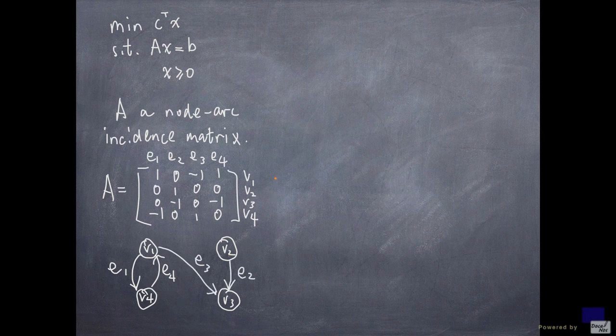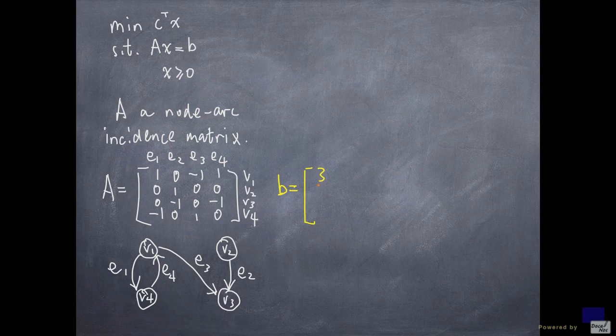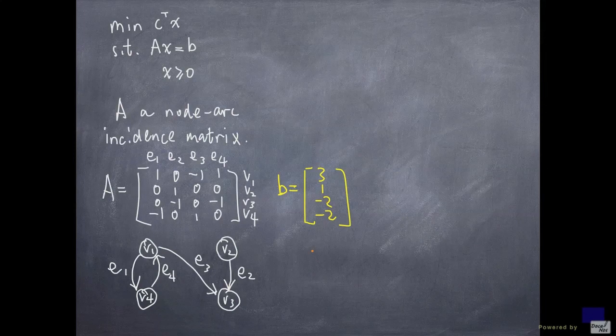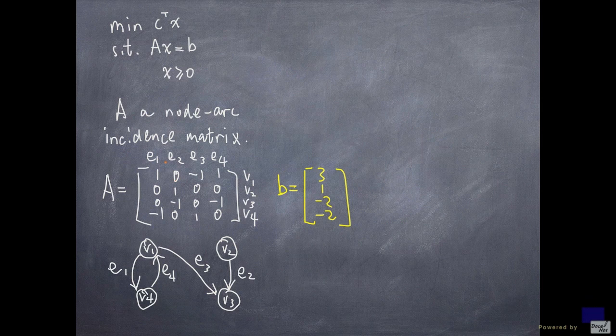Now suppose I have a vector b, say 3, 1, minus 2, minus 2. What I'm going to do is place these values onto these nodes. So the first value for b will be placed alongside the node v1, and so on.